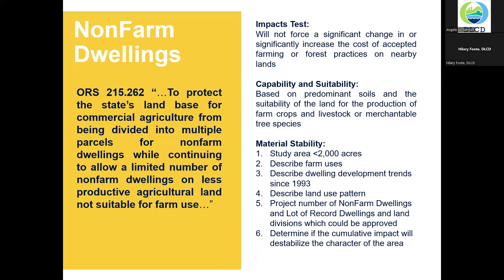Non-farm dwellings have been a topic of discussion and controversy since they were added to the exclusive farm use zone in 1973. Hector McPherson, who we mentioned earlier as a principal sponsor of Senate Bills 100 and 101, stated in 1978 that the purpose of non-farm dwellings was not to open the exclusive farm use zone up to subdivisions, but rather to provide a little escape valve whereby a small amount of single-family residential dwellings could be allowed within an exclusive farm use zone. As we've just seen, however, non-farm dwellings represent nearly a quarter of all dwelling approvals in farm zones and constitute more dwelling approvals than dwellings in conjunction with farm use or farm worker housing.